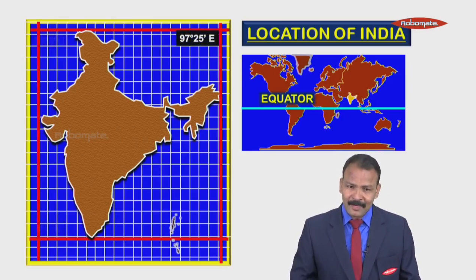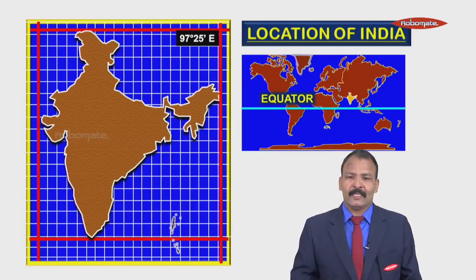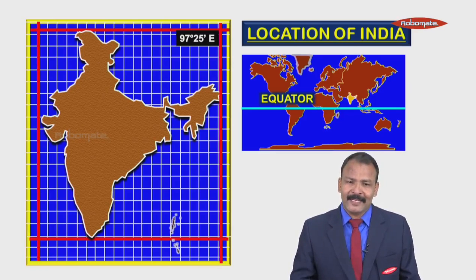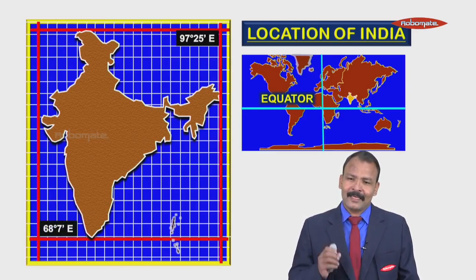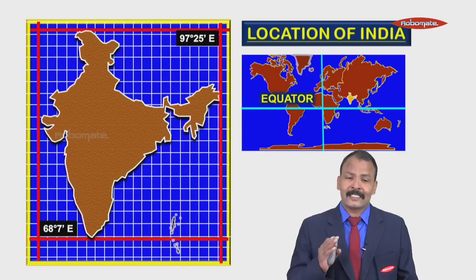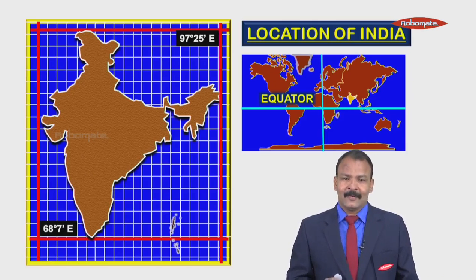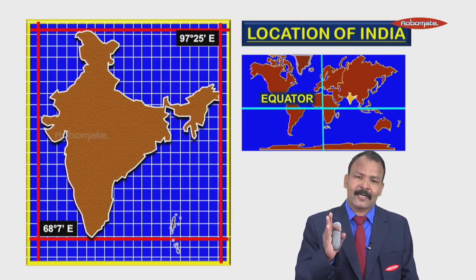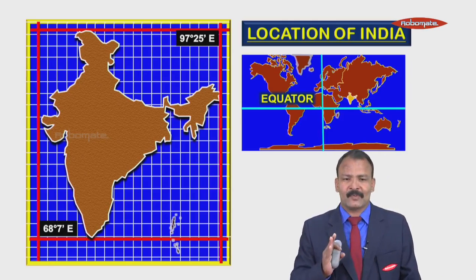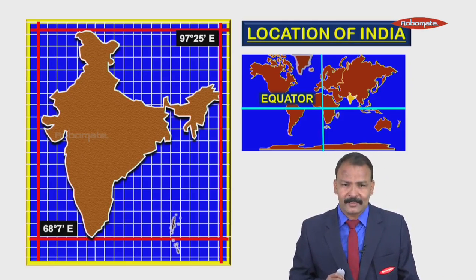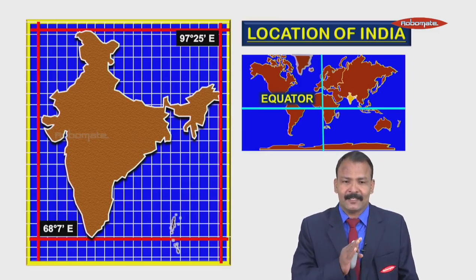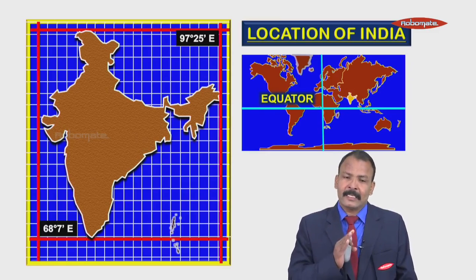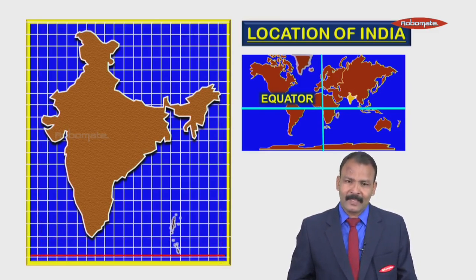Similarly, India lies between 68 degrees 7 minutes east and 97 degrees 25 minutes east. India lies completely in the eastern hemisphere, which is why we use these eastern coordinates.